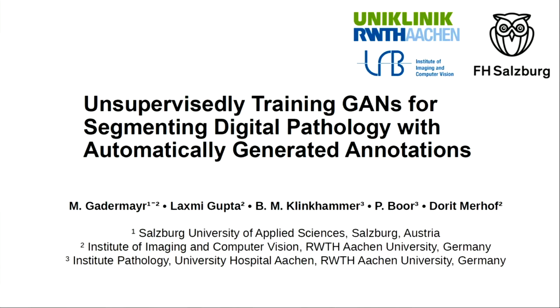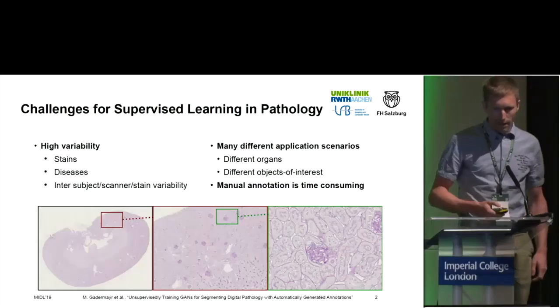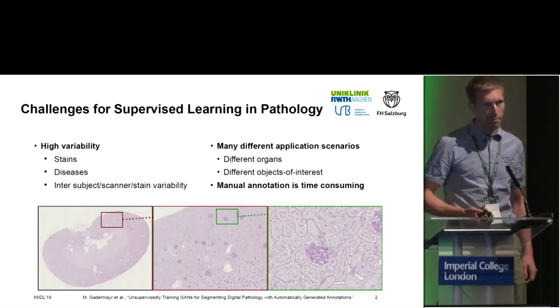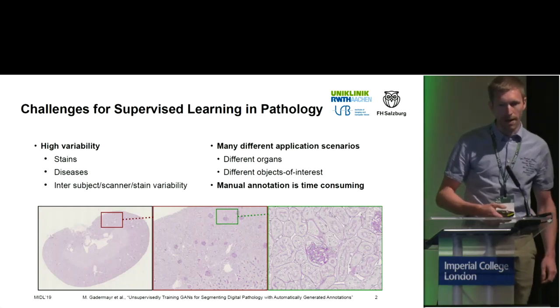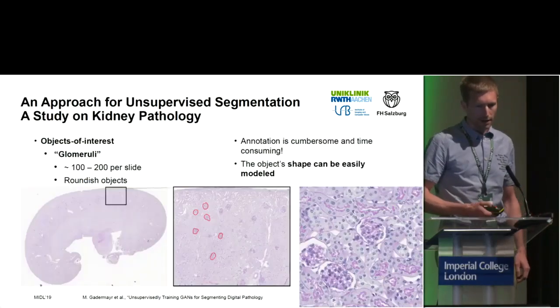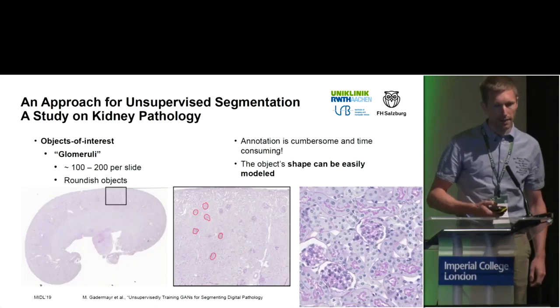Our contribution has the title 'Unsupervised Training GANs for Segmenting Digital Pathology with Automatically Generated Annotations.' The problem in supervised learning in digital pathology is that we have very high variability, quite a lot of different application scenarios, and annotation is time consuming. That is why we consider an approach for unsupervised segmentation.